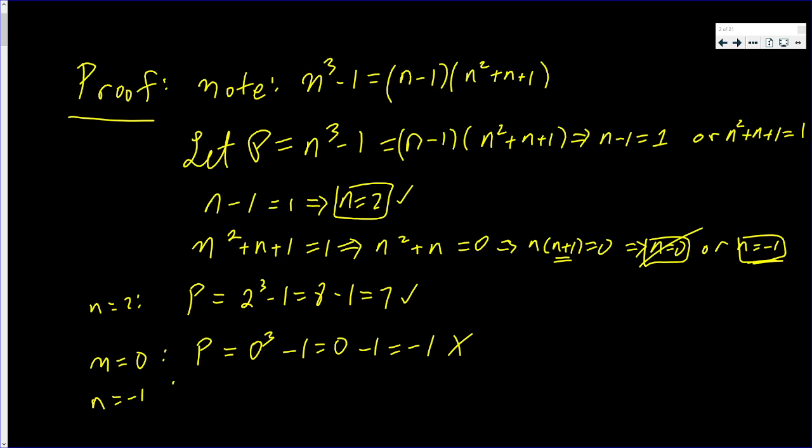What about n is equal to negative 1? That means P is negative 1 cubed minus 1, which is negative 1 minus 1, which is negative 2. P cannot equal negative 2. So that's out.